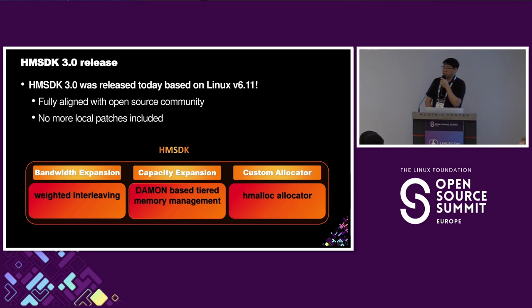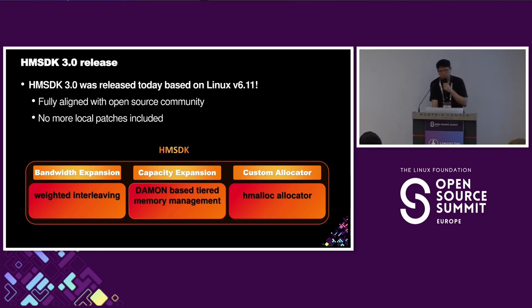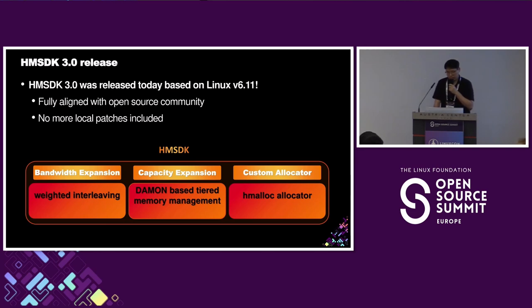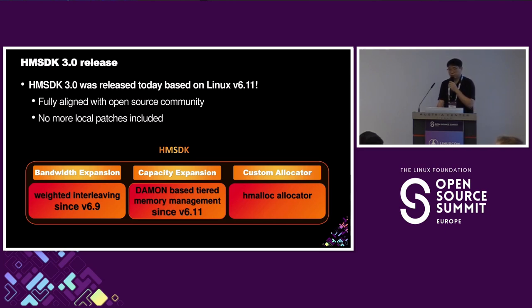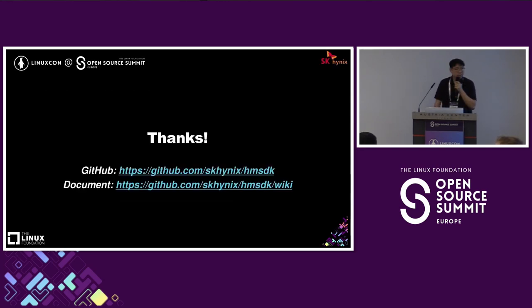We have made a new release called HMSDK 3.0, released today, based on Linux 6.11, which was released yesterday. This version is fully aligned with the open source community with no more local patches included. For bandwidth expansion, it is supported from kernel 6.9, and capacity expansion is supported from 6.11.